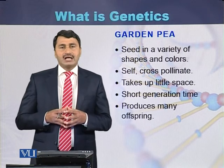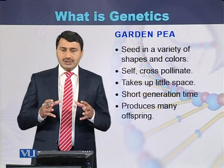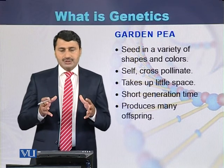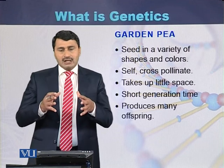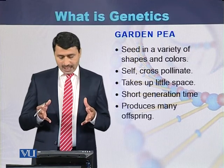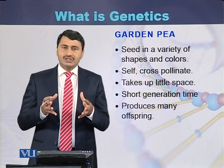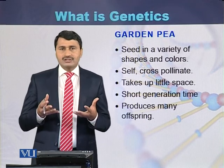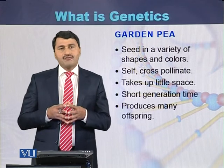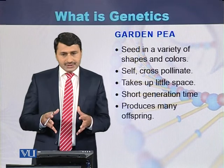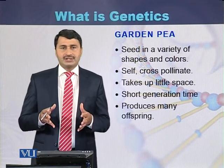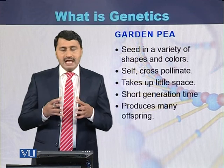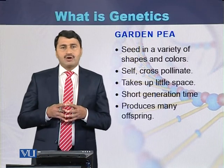The seeds of the garden pea are available in many varieties. This plant self-pollinates as well as cross-pollinates. It takes little space to grow, has a short generation time — within two to three months one can grow it and obtain seeds — and it produces many offspring at a time.